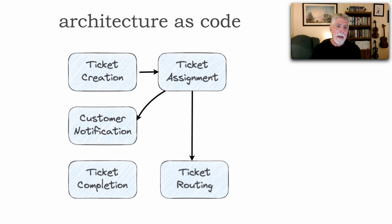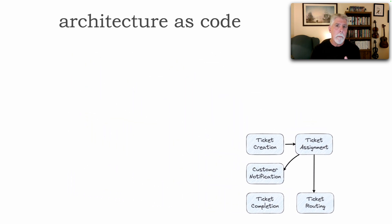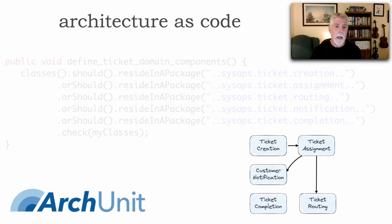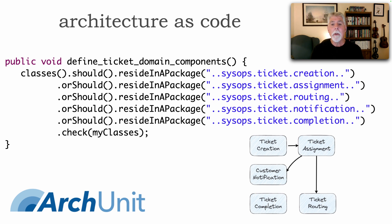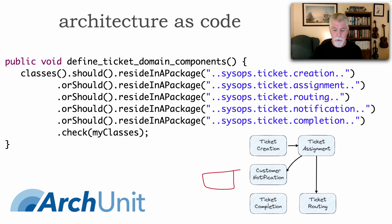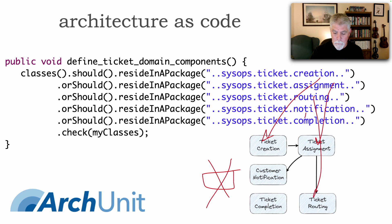I can also take the ticketing domain and blow that up to see the five components and how they interact. We can also describe our components as code. Using ArcUnit in Java, I could define my ticket domain components as: classes.should.reside in a package — sysops.ticket.creation, assignment, routing, notification, and completion. As this executes, if a developer created any additional component that doesn't exist in my architecture, this would find it. But it also describes my architecture — I've got five main components: creation, assignment, routing, notification, and ticket completion.